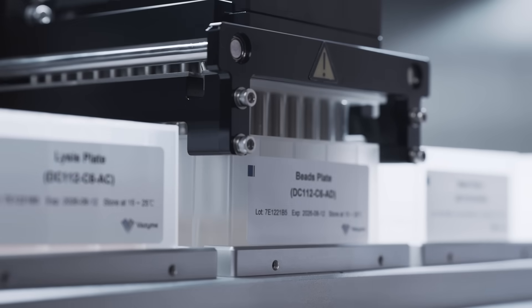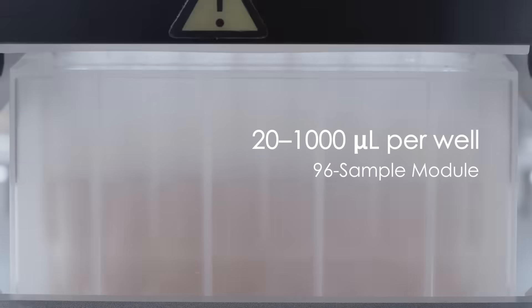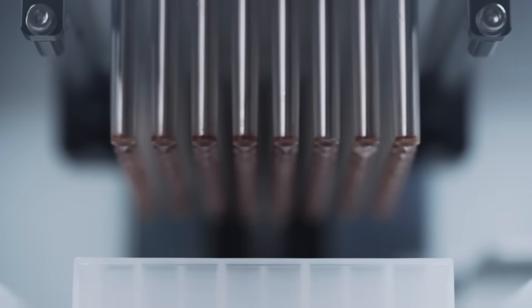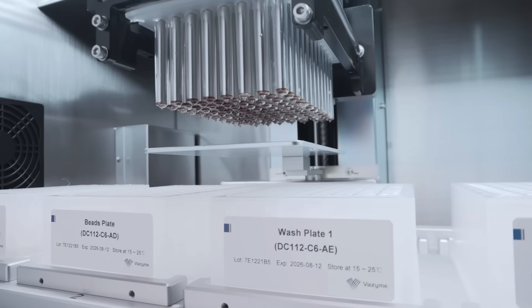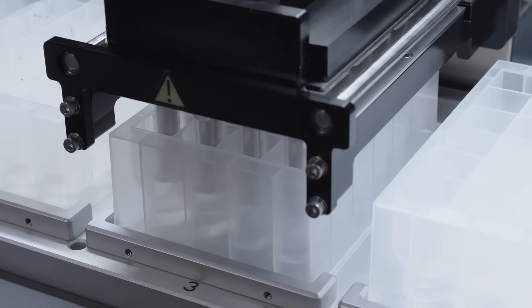The 96 sample module processes 20 to 1000 microliters per well, ideal for routine high throughput workflows for larger sample volumes.